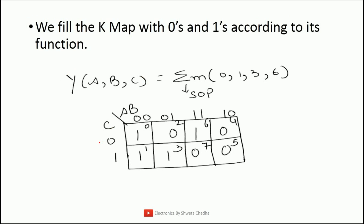The next rule is we need to fill the K-map with respective 0s and 1s as per the given function — whether we have SOP or POS. Taking the same example again, Y(A, B, C): that means a 3-variable K-map is going to be designed. Summation small m signifies that we have an SOP function — sum of product. For SOP, we must fill 1 in the given positions. So blocks 0, 1, 3, and 6 — in all these blocks we are going to fill 1. In the remaining blocks, we are supposed to fill 0.